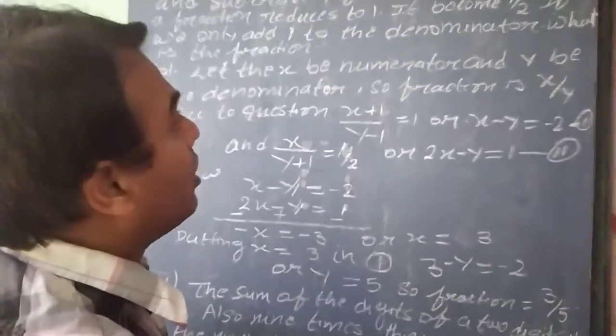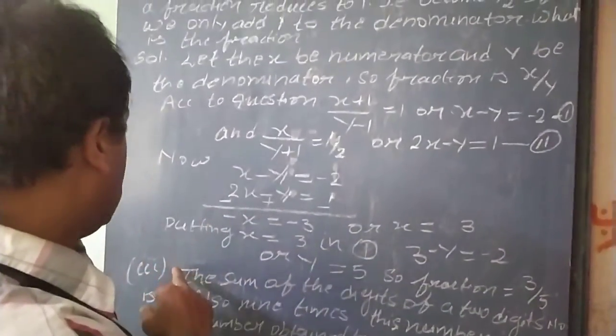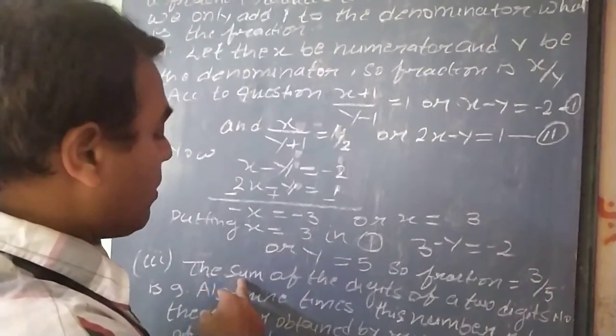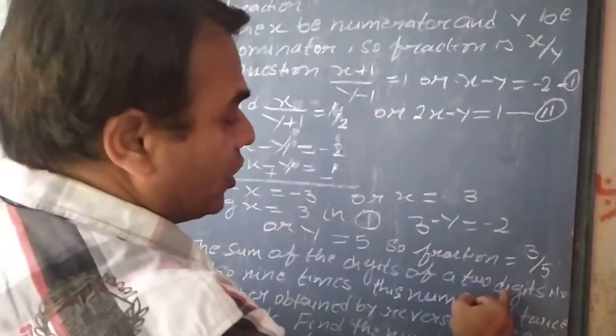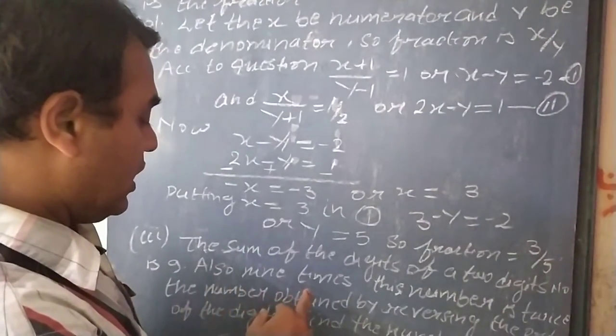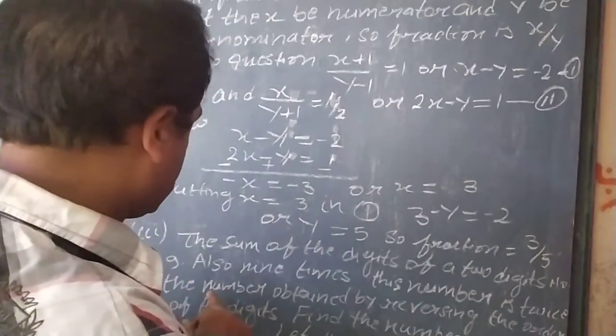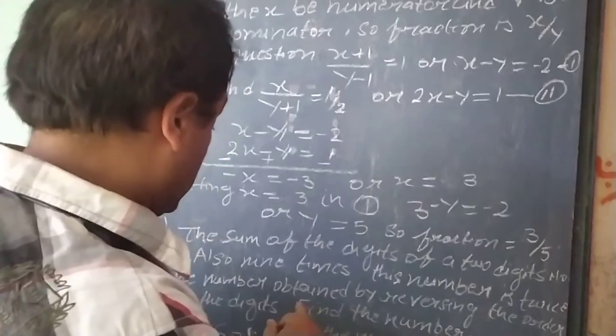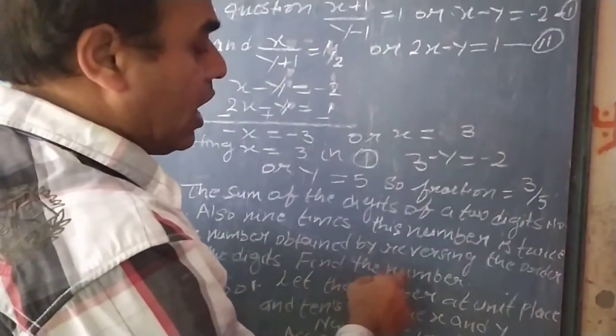So in this way we have solved the problem. Now question number 2 third, the third question of second number. The sum of the digit of 2 digit number is 9. And also, the 9th term of a number is twice the number obtained by reversing the order of the digit. Find the number.